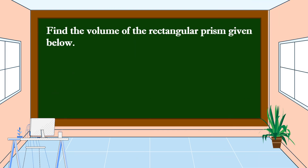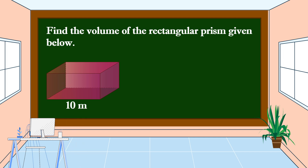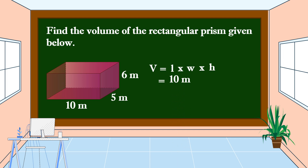Find the volume of the rectangular prism given below with a length of 10 meters, a width of 5 meters, and a height of 6 meters. We are going to use this formula: Volume is equal to length times width times height. The length is 10 meters, the width is 5 meters, and the height is 6 meters. Let's multiply: 10 meters times 5 meters is equal to 50 square meters, times 6 meters, the volume is equal to 300 cubic meters.